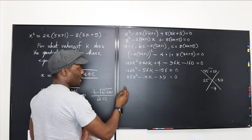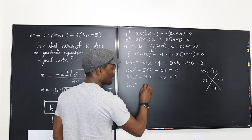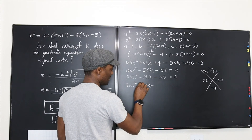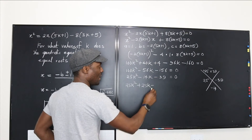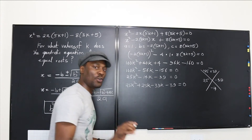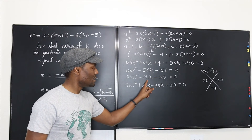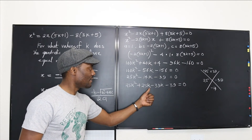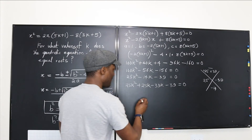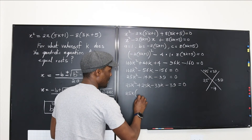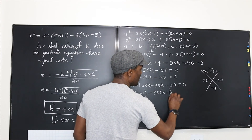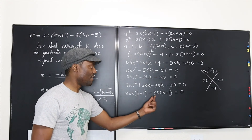So we have: 25k² − 25k − 39k + 39 = 0. Wait — it's 25k² + 25k − 39k − 39 = 0. Now let's factor by grouping: 25k(k + 1) minus 39(k + 1) = 0. So we have (k + 1)(25k − 39) = 0.